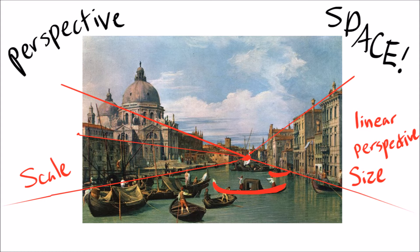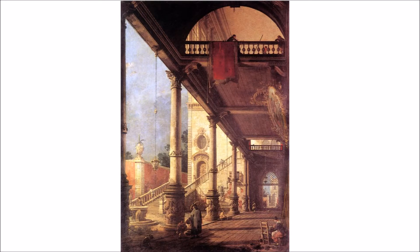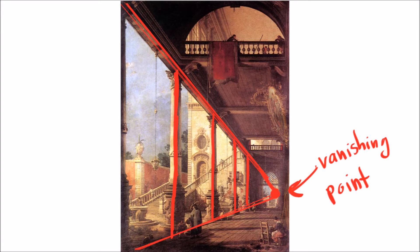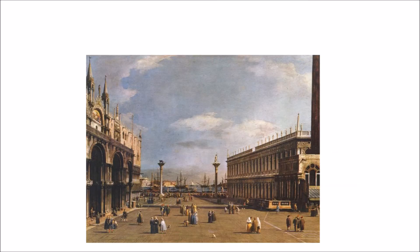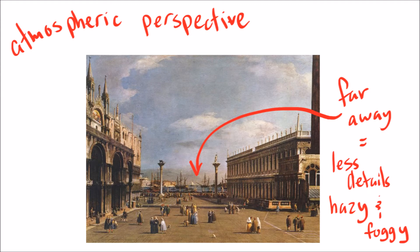Also, size and scale: things closer to us are bigger and things further away look smaller, like the boats. When you have one-point perspective, the lines meet at a dot called the vanishing point, and things get smaller and smaller until they vanish. Another way to show perspective is called atmospheric perspective, where things in the distance are hazy and have less detail.